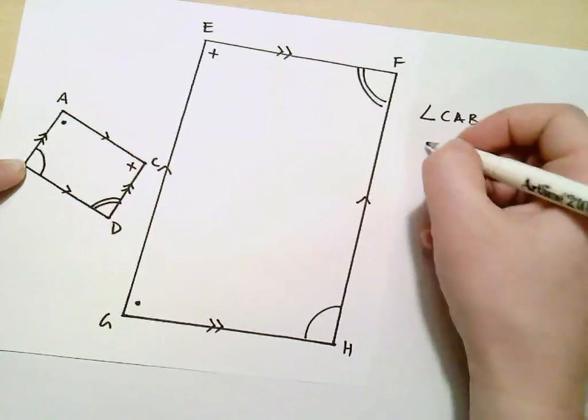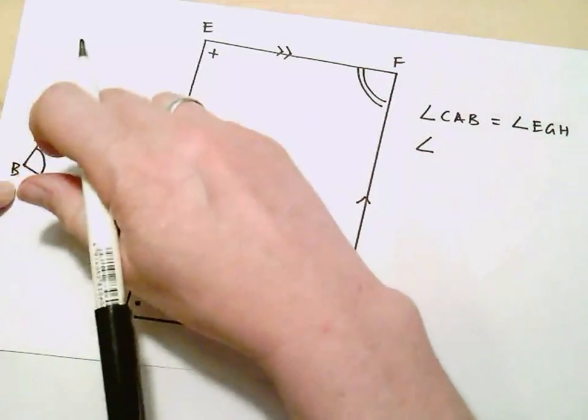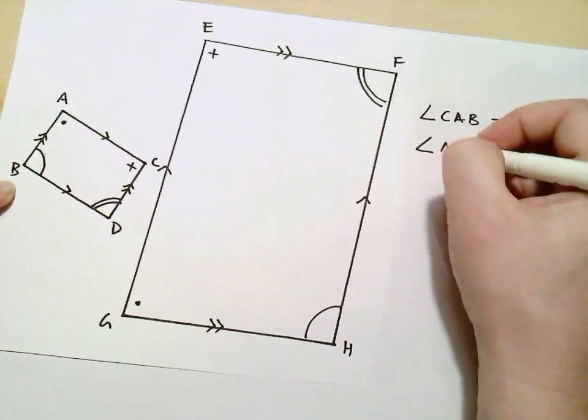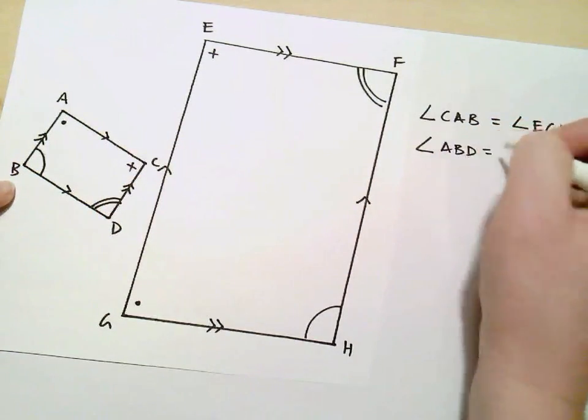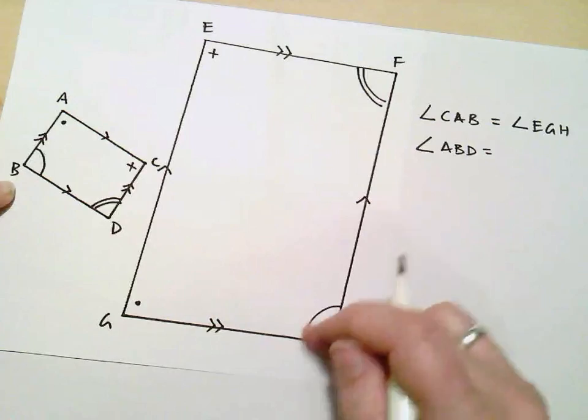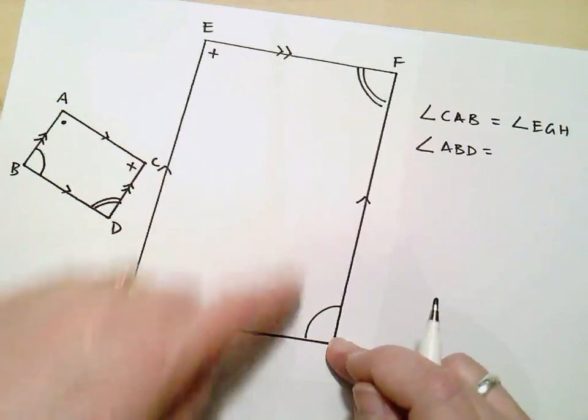I can see that angle. This one here. ABD. I can see that that's equal to this one since it's got the same symbol. GHF.